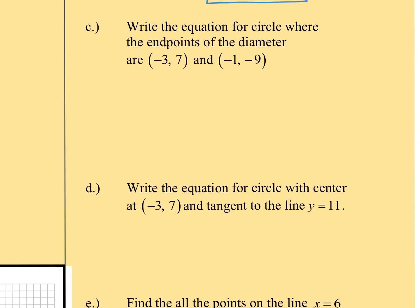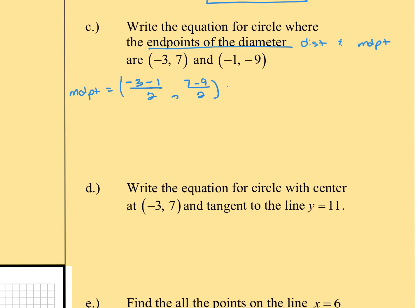The next one is to write the equation for a circle given the endpoints of the diameter. This is a great application for our distance and midpoint formulas. When we've been reviewing distance and midpoint, this is a great review of it. The center of a circle is of course going to be our midpoint, so we're going to quickly find our midpoint here. That's going to be our negative 3 minus 1 and a 7 minus 9, so the center of our circle is negative 1, negative 1.